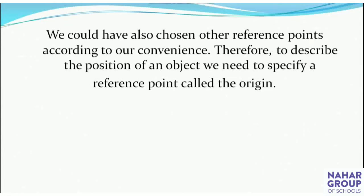We could have also chosen other reference points according to our convenience. To describe the position of an object, we need to specify a reference point called the origin. In a Cartesian plane, if we want to describe the position of an object, we often replace the reference point with the origin. Origin is where the x and y-axis meet in two-dimensional space, and at the origin the value of x and y is 0.